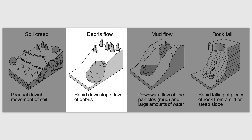Second is something we call debris flow, sometimes called a landslide. This is much more rapid. It's when a collection of debris — which can include all sizes of rock, soil, mud, vegetation, anything — falls rapidly downhill. We call it a debris flow or a landslide.